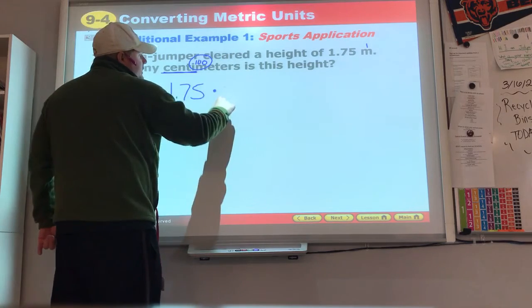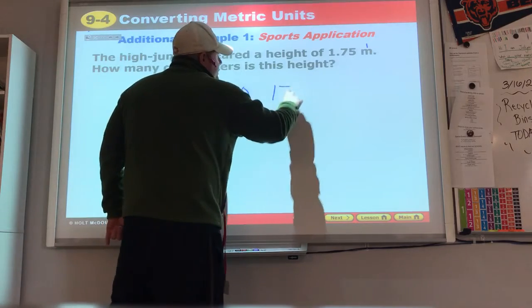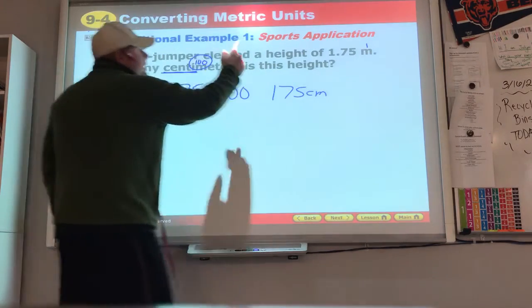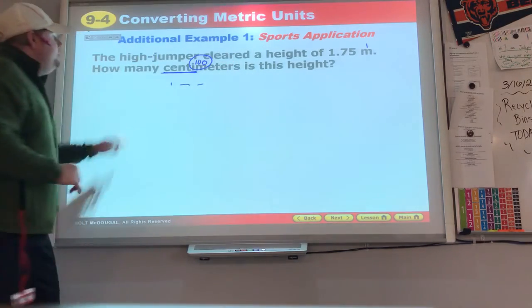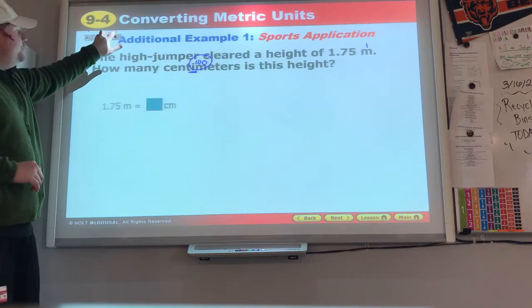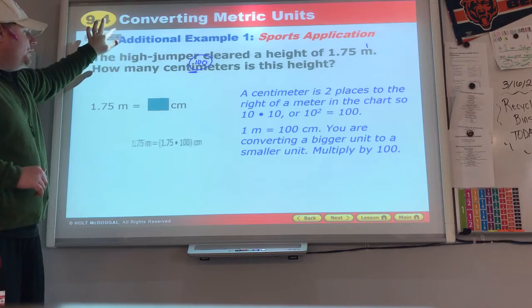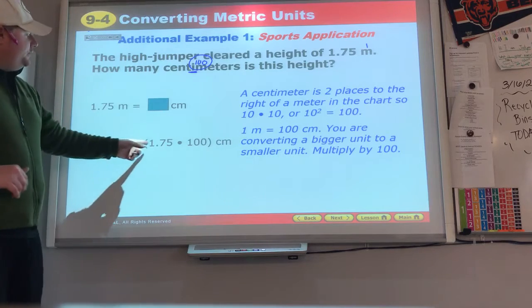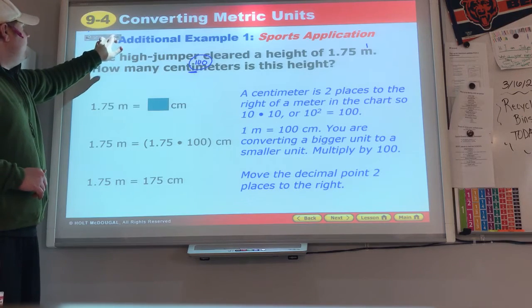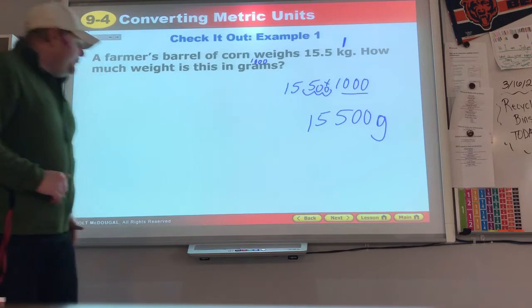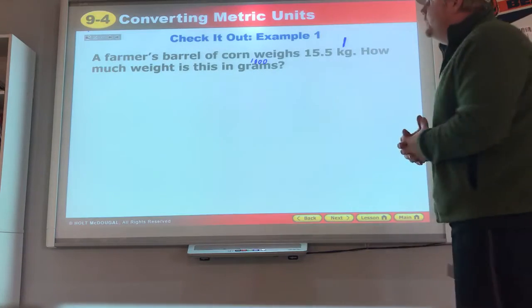We know if we remember from yesterday, big to small means whatever number I have, I take and I multiply that by one meter makes a hundred. So I multiply by the 100 and I find out it's 175 centimeters is one meter. They're going to show you the logical way that they do it, similar to mine. One point seven five meters, how many centimeters? Well, one equals 100, so we take 1.75 times the 100 centimeters to get our 175 centimeters.